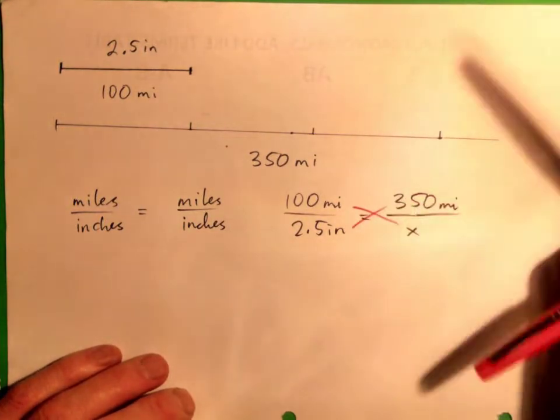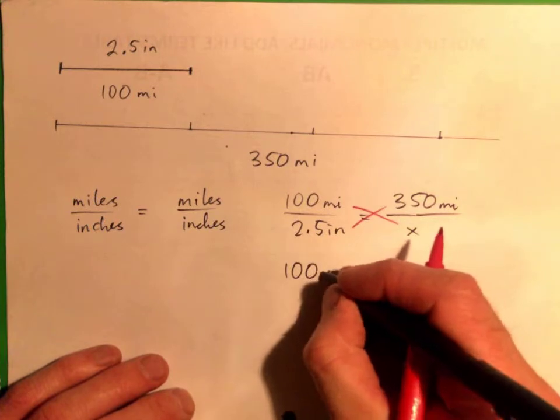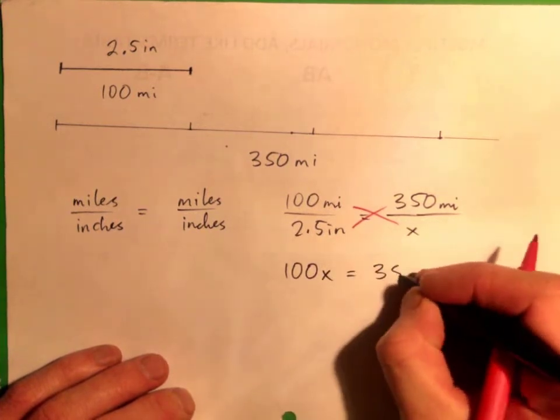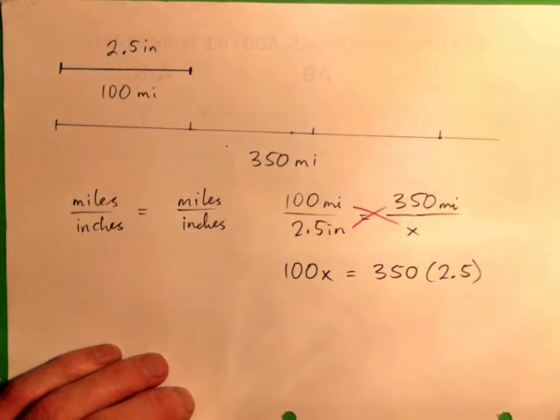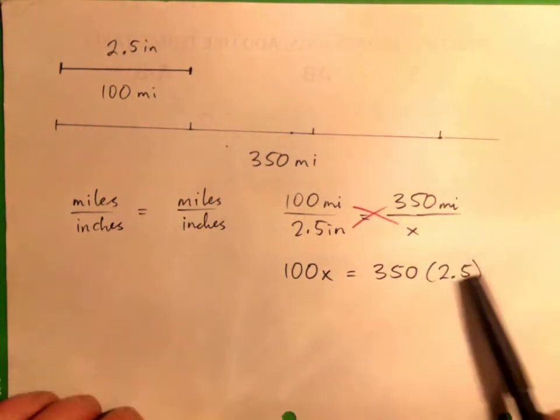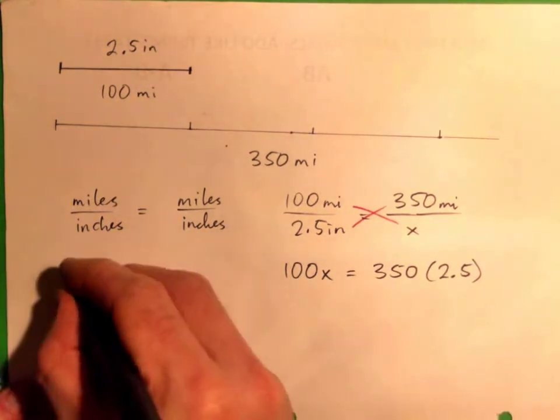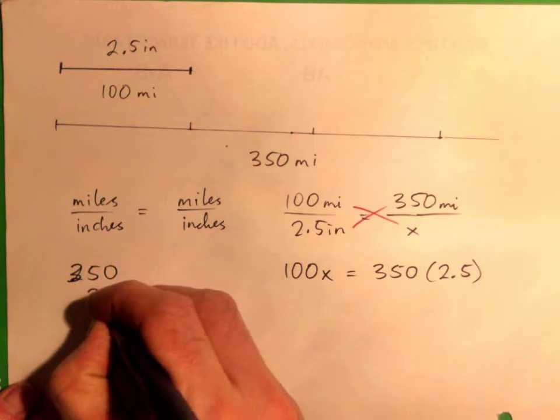Now when we cross multiply, it should be the same thing though, because you'll get 100 times x, 100 times x equals 350 times 2.5, right? And then to get x by itself divide by 100. I guess we could multiply these first. That's one way of doing it. It doesn't have to be done that way.